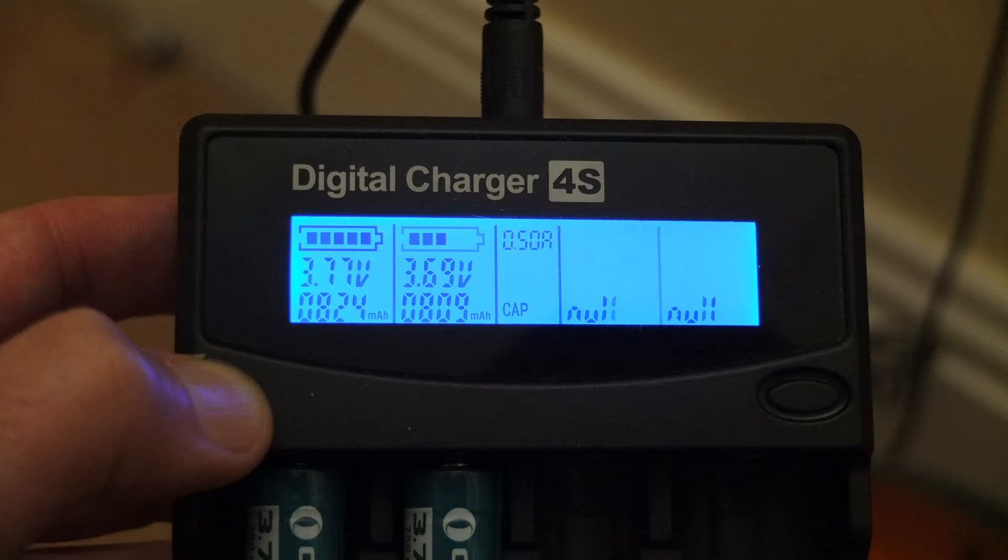Now running the capacity test, I ran this twice, and both times both cells came out at over 800 milliamp hours. So that's above specification, which is a good sign. That's about as high as you can get with a 14500 cell. I've seen some mid-range ones a bit lower, around about 600-700, so that's a good capacity number for those.